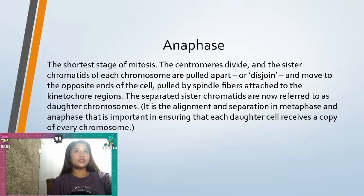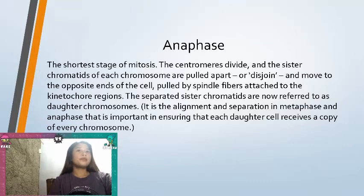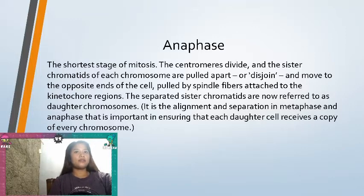Anaphase is the shortest stage of mitosis. The centromeres divide and the sister chromatids of each chromosome are pulled apart or disjoined and moved to the opposite end of the cell, pulled by spindle fibers attached to the kinetochore regions. The separated sister chromatids are now referred to as daughter chromosomes. It is the alignment and separation in metaphase and anaphase that is important in ensuring that each daughter cell receives a copy of every chromosome.